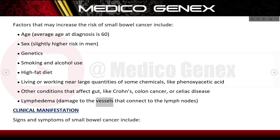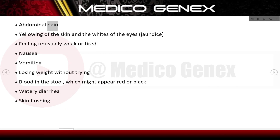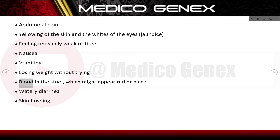Clinical manifestations — signs and symptoms of small bowel cancer — include abdominal pain, yellowing of the skin and whites of the eyes (jaundice), feeling unusually weak or tired, nausea, vomiting, losing weight without trying, blood in the stool which might appear red or black, watery diarrhea, and skin flushing.